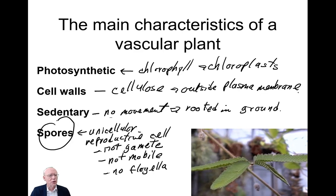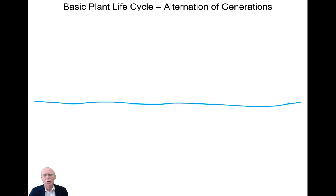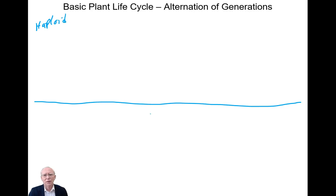We need to look more closely at what spores are and how they fit into the life cycle. We're going to draw the life cycle of a basic plant. We'll draw a horizontal line on the screen. On the top of the line is the haploid part of the life cycle, and below the line is the diploid part.